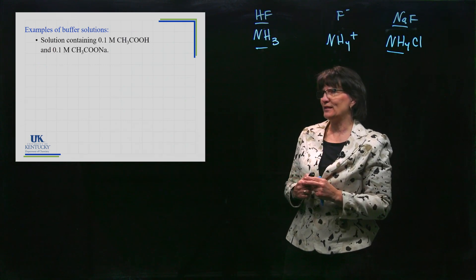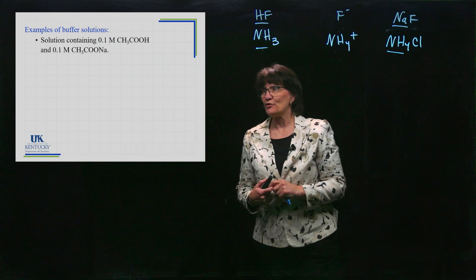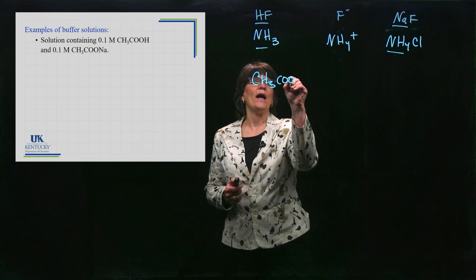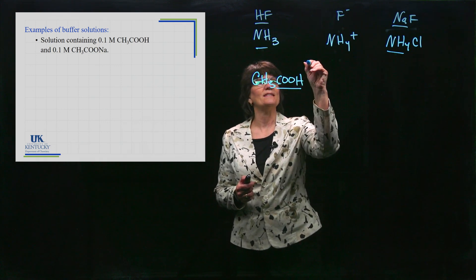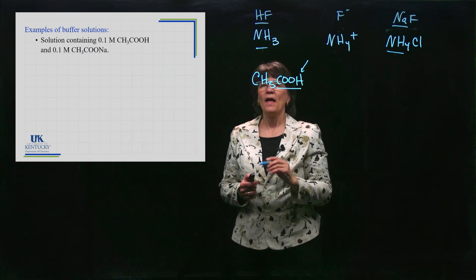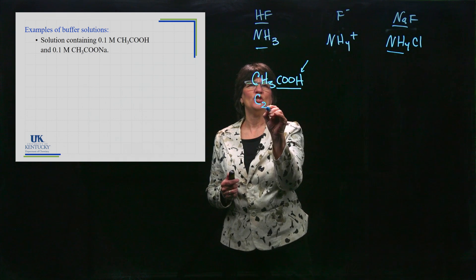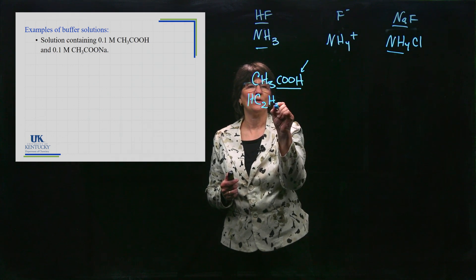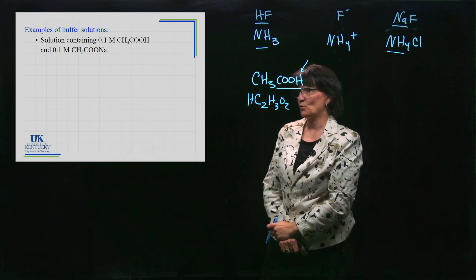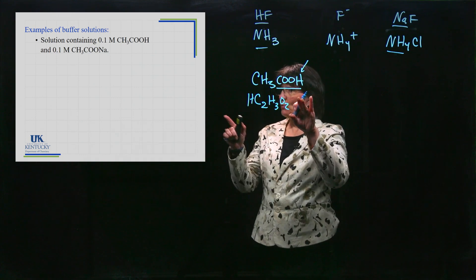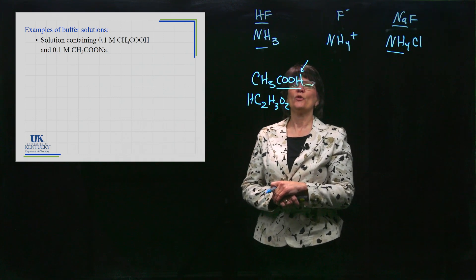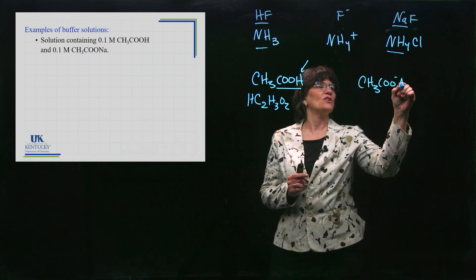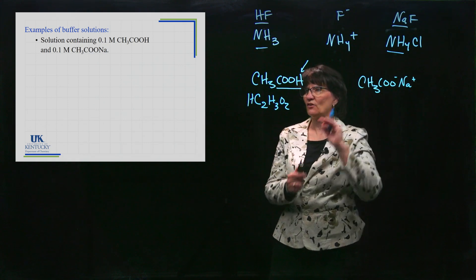Here's some examples of buffers. I could have a solution that contains CH3COOH - when we see this group, that's an organic acid group and it's this hydrogen that's donatable, not these. Another way that we could see this written is HC2H3O2. Sometimes you see acetic acid written this way. If it contains acetic acid and sodium acetate, that is the salt containing its conjugate base. There's its conjugate base, and as soon as I stick the Na with it, it's the salt containing its conjugate base.